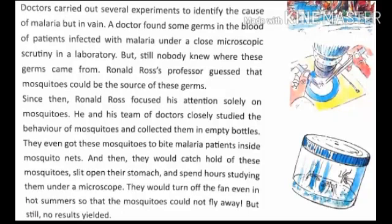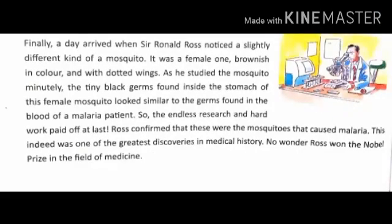One day Sir Ronald Ross noticed a slightly different kind of mosquito. It was brownish in color with dotted wings. As he studied the mosquito minutely, tiny black germs were found inside the stomach of this female mosquito, which were similar to the germs found in the blood of a malaria patient. So the endless research and hard work paid off at last. Ross confirmed these were the mosquitoes that caused malaria.